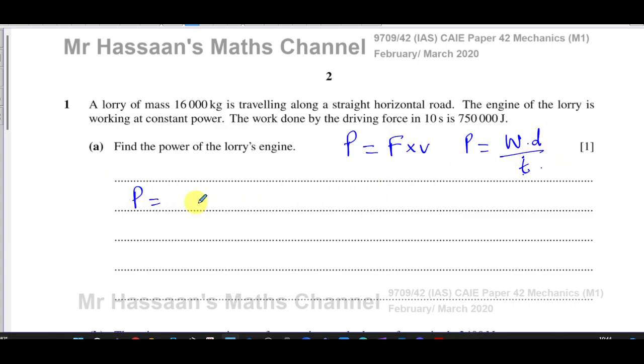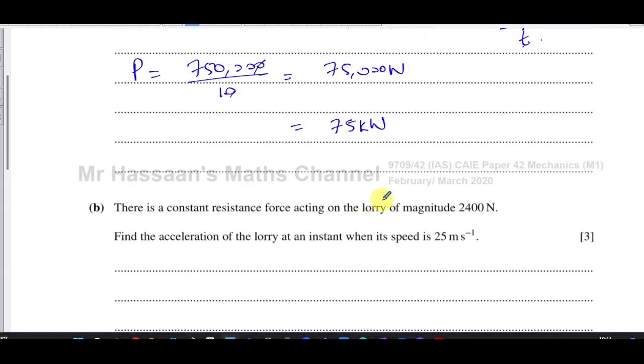So the power is going to be the work done, which is 750,000 divided by the time, which is 10. That's going to give you 75,000. And that's going to be in watts. The unit of power is watts. So you can say 75,000 watts. It doesn't tell us how to express it. But you can also write it as 75 kilowatts if you want. Same thing, because one kilowatt is 1000 watts. So there's the answer to part A. Pretty simple.